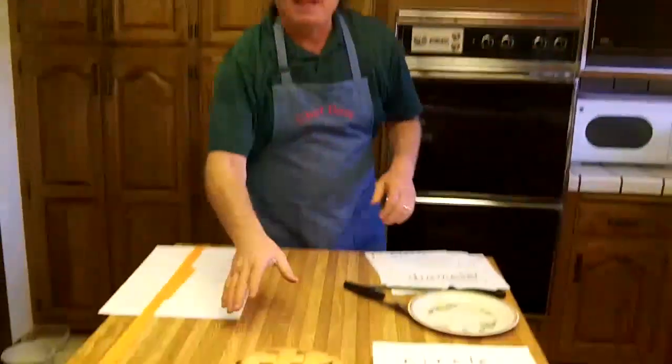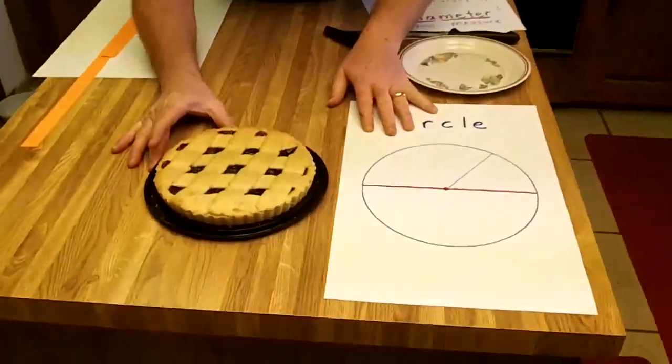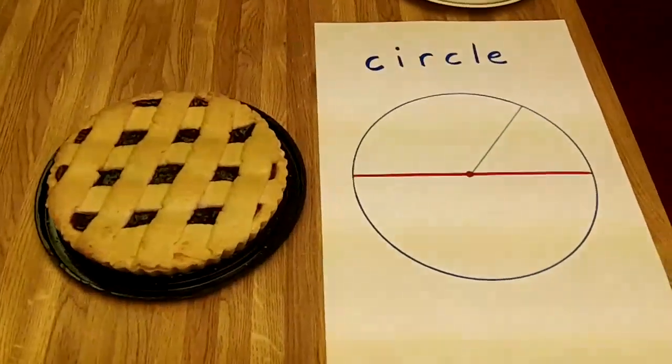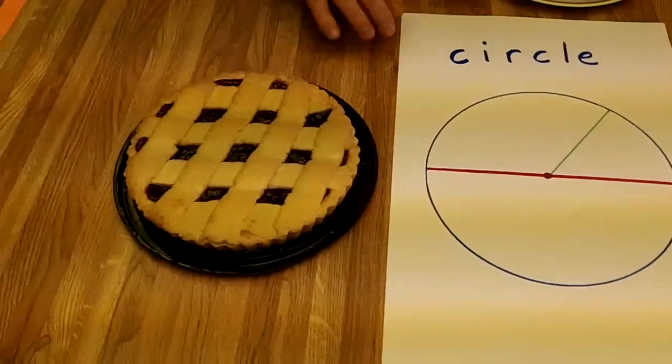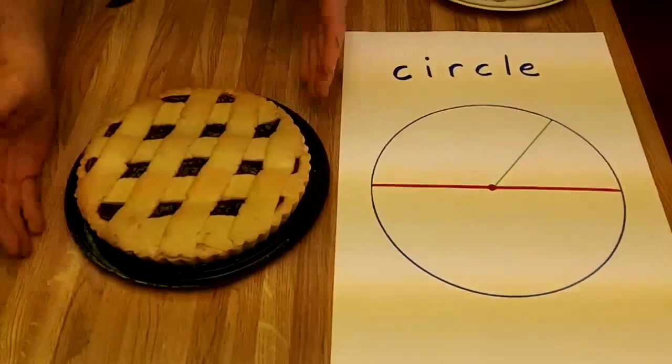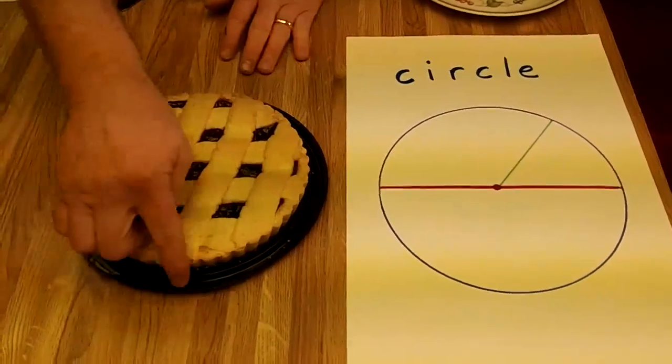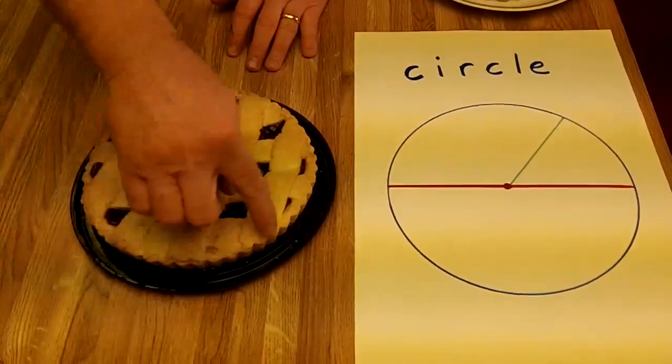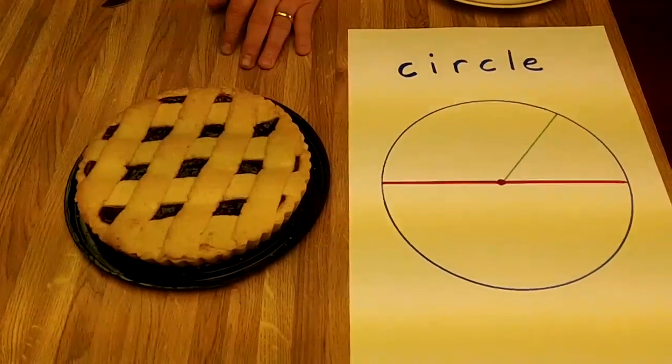Okay, there's the pie. Now, this is P-I-E. I want to introduce us to what a circle is. Here's a great circle on the outside edge of that pie.